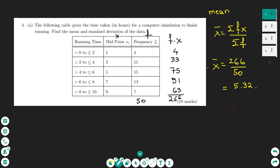Sigma means the sum of the multiplications of F times X. So I need to make another column on the table for F times X, multiplying the frequency by the midpoint.